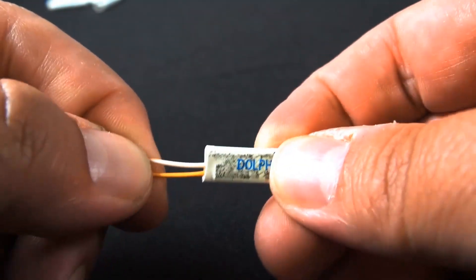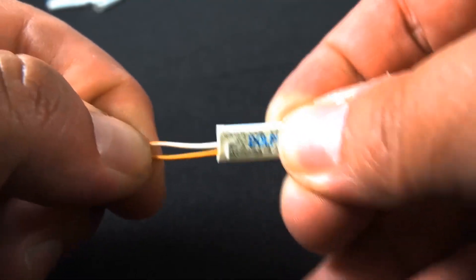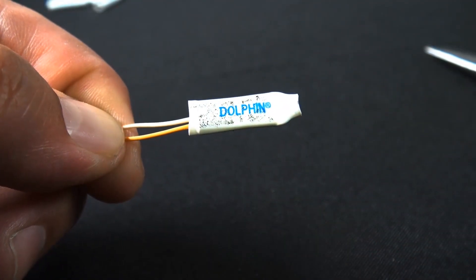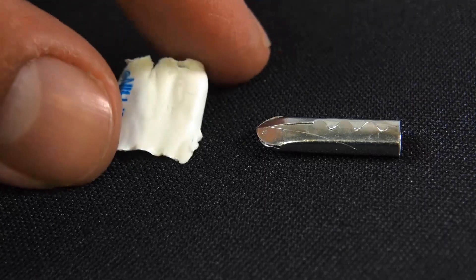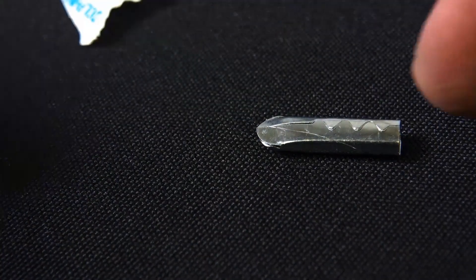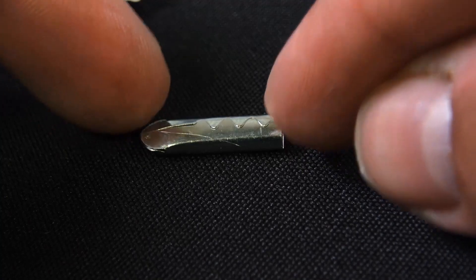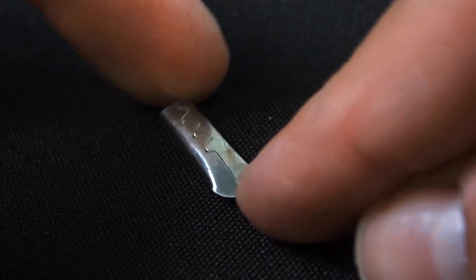Because inside the connector itself, there's these razor sharp insulation piercing teeth. And let's go ahead and take a look at that. That stripped that plastic part off, and that's what it looks like underneath. And let's go ahead and crack that open.